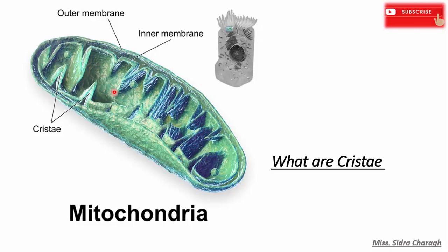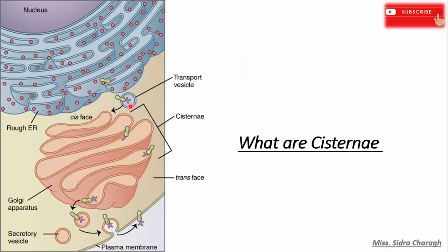Moreover, cristae contain proteins such as ATP synthase and a number of cytochromes that are essential for aerobic cellular respiration. So the main function of cristae is to carry out the electron transport chain.